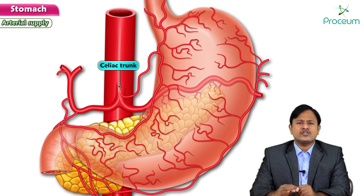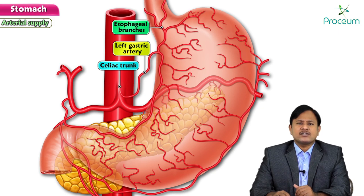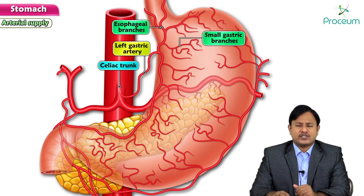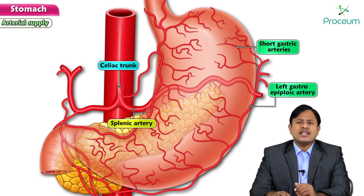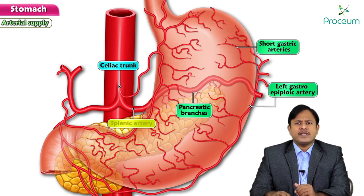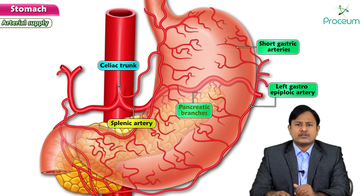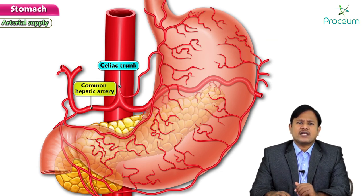The celiac trunk gives rise to three branches. The first branch is the left gastric artery, which divides into esophageal branches and small gastric branches. The second branch is the splenic artery, which gives rise to three branches: the short gastric arteries, the left gastroepiploic artery, and arteries to the pancreas.